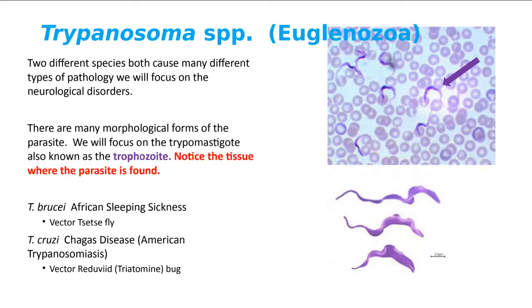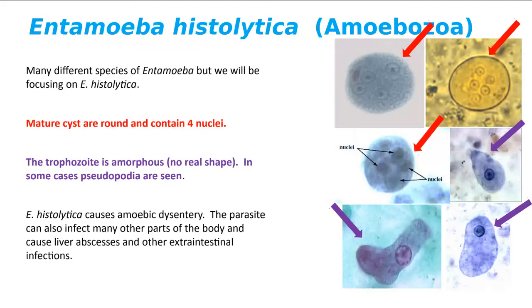Next we go to the Amoebozoa: Entamoeba histolytica. The cysts are perfectly round and have several nuclei — at least four, sometimes up to fourteen. The cyst is shown by the red arrows. The trophozoite, shown by the purple arrows, is amorphous — no real shape. One might look like a pear, another like a potato, another like a boot. The clue is: if you hear amorphous, it's an amoeba.